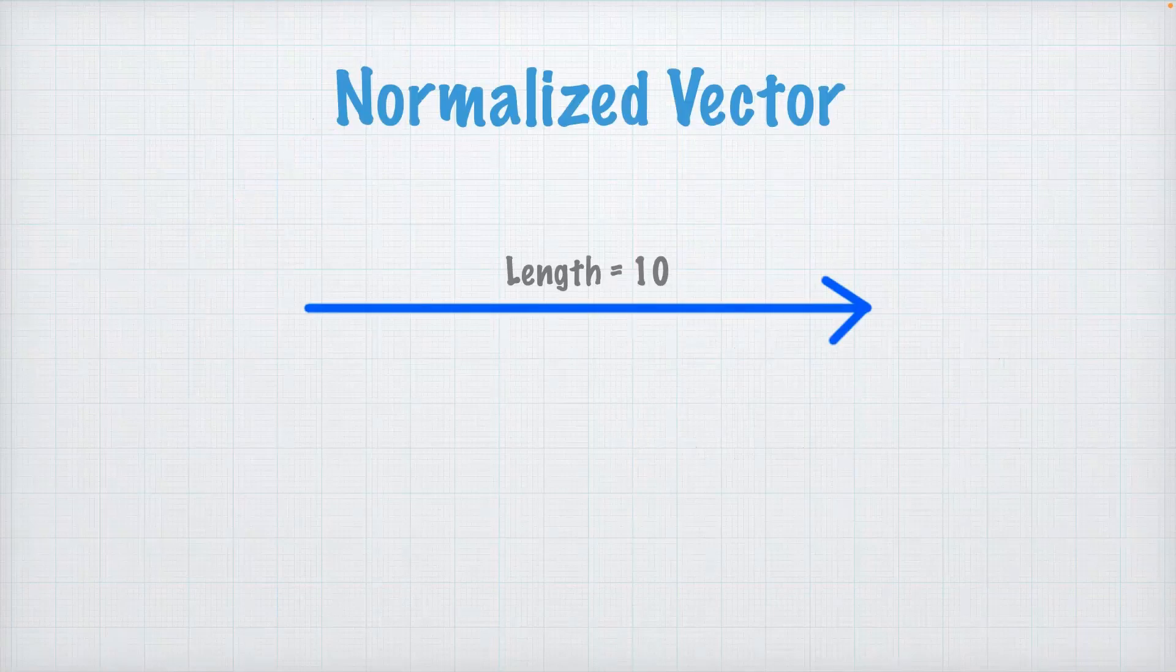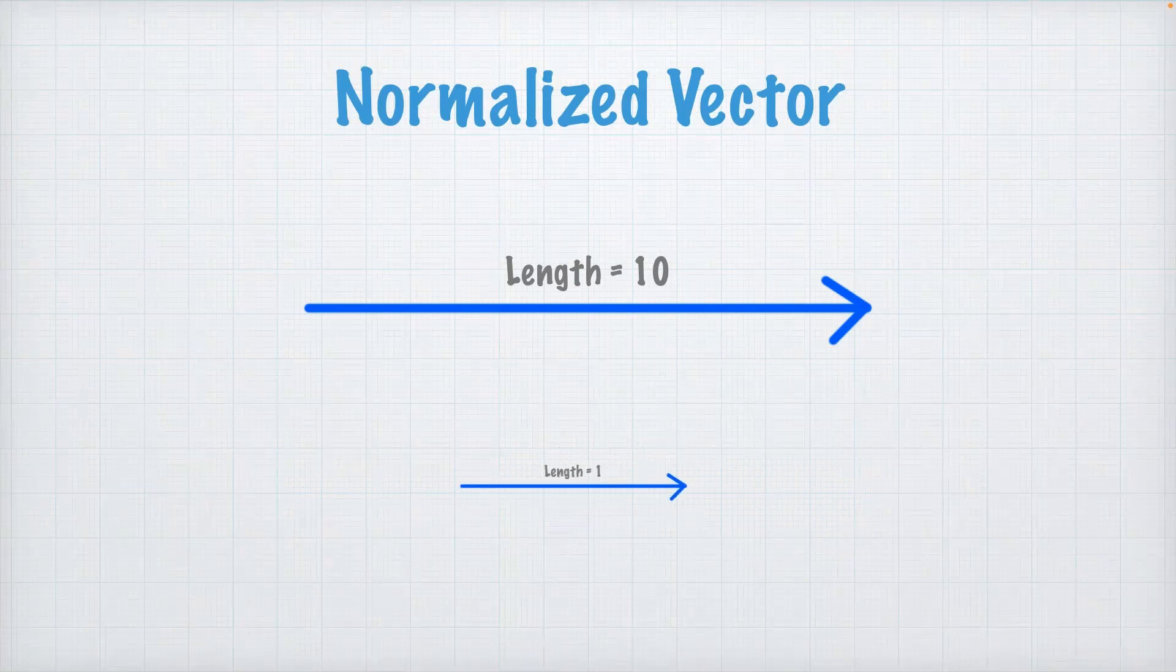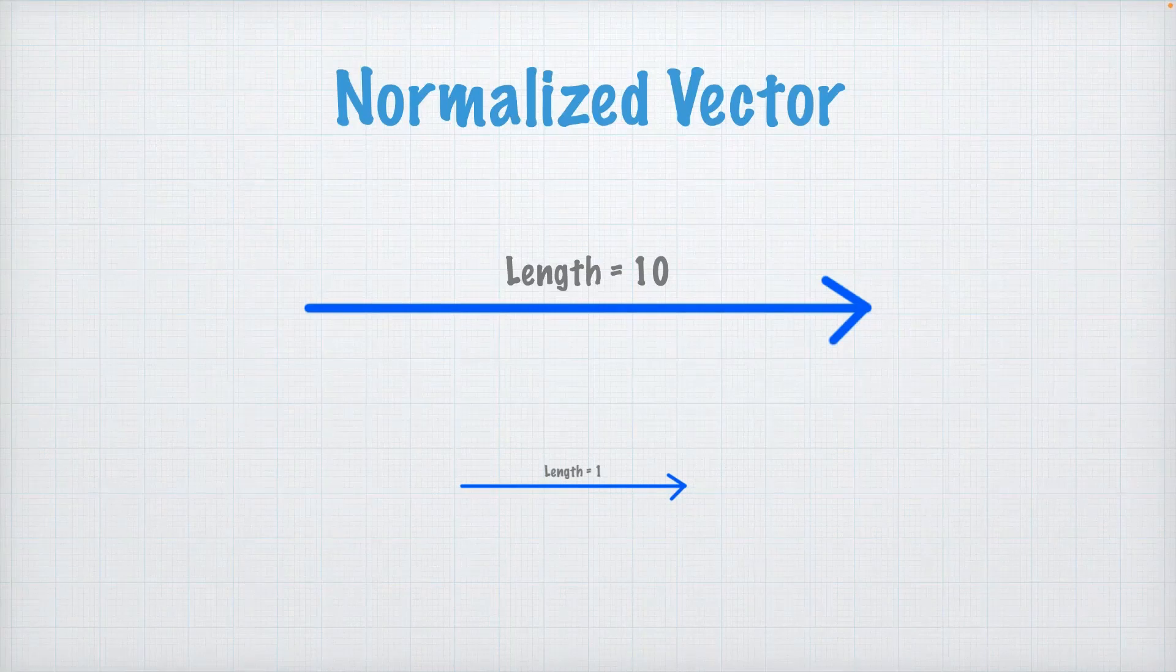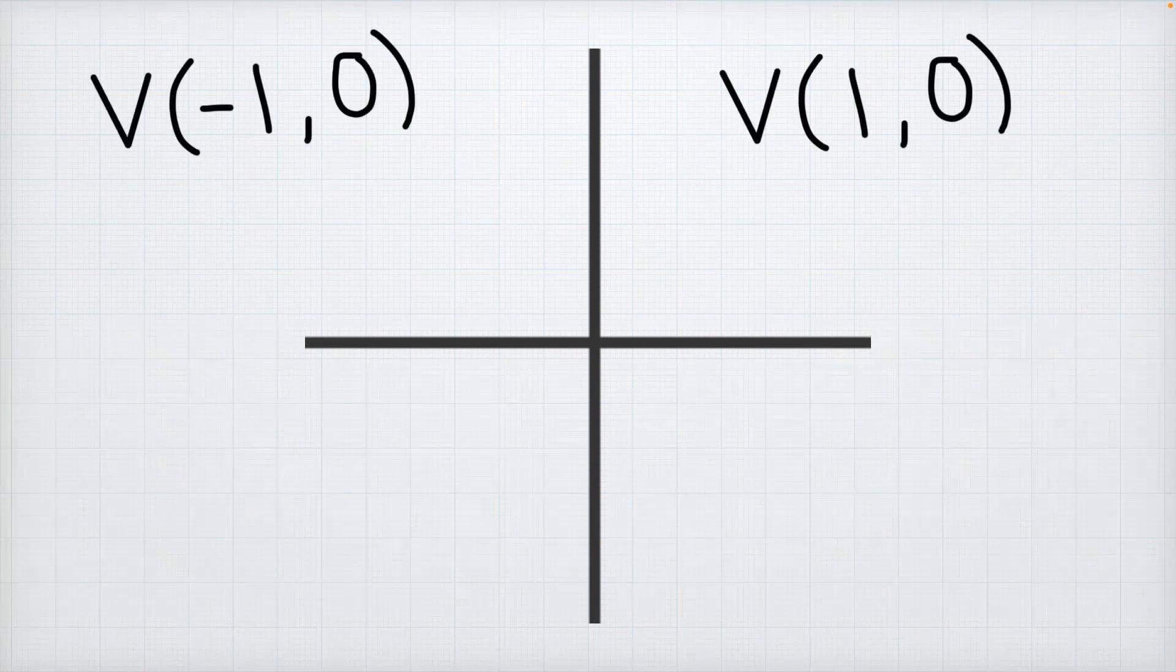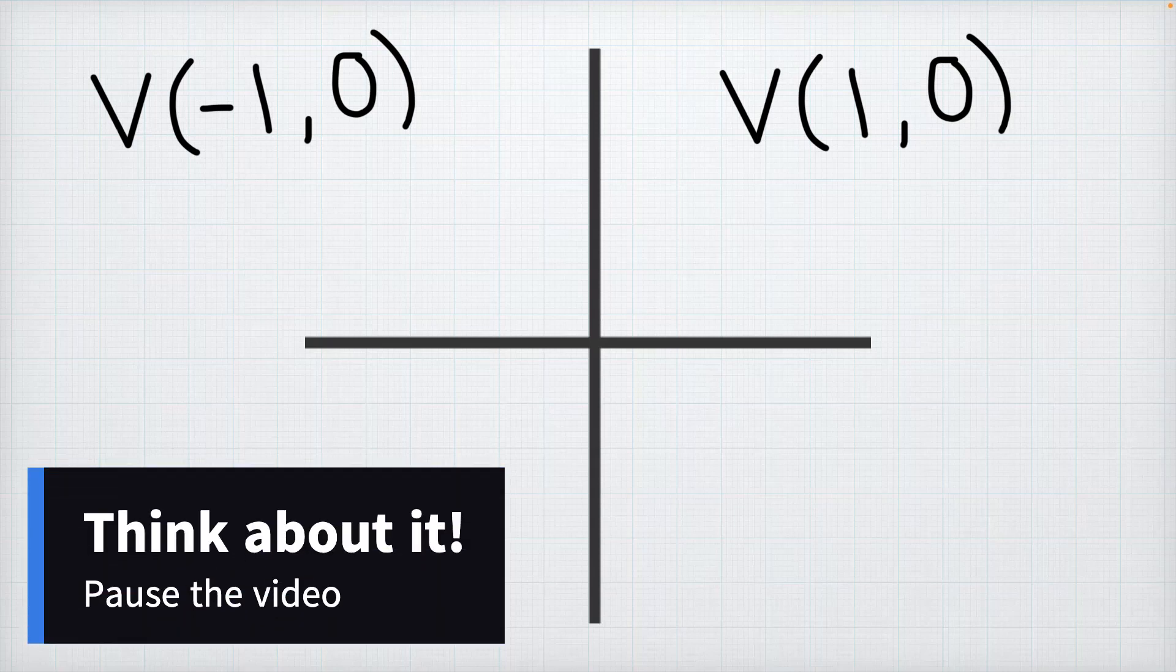So in Unity we're going to receive our input as a normalized vector. So a normalized vector is a vector that has been scaled down so that its values are between 0 and 1. Earlier we talked about how the direction of a vector is determined by the signs of its x and y components. So we can create a vector that represents a direction by using these signs. So take a moment to pause the video and think about which direction you think these two vectors point. When you're ready unpause the video and we can work through it together.